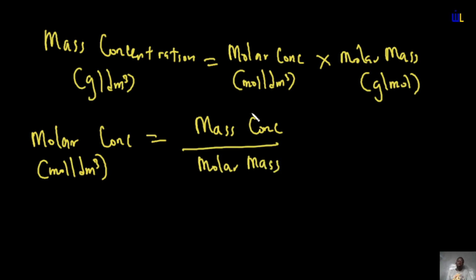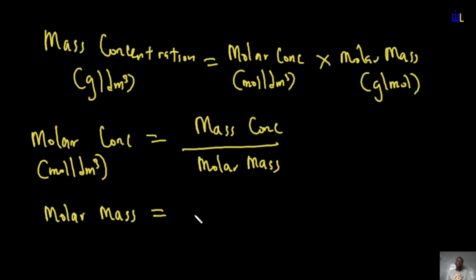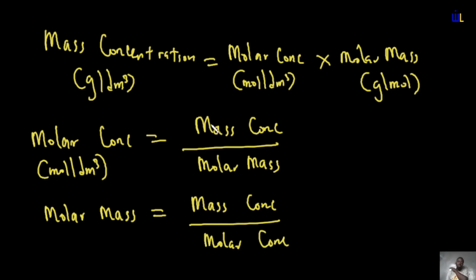In situations where you are not given the individual atomic masses to find molar mass the conventional way, you can find molar mass using: molar mass = mass concentration ÷ molar concentration. Making any variable the subject of the formula gives a new useful expression. We will be applying all these things, which is why I'm covering them before we get into questions.